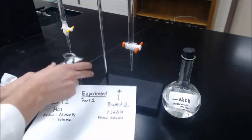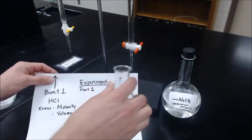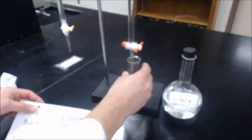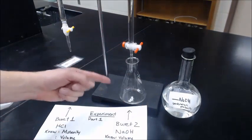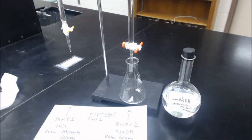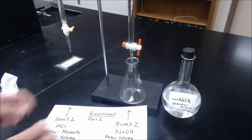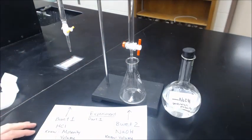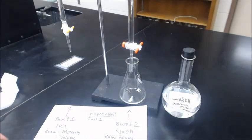In the second burette, you're going to have sodium hydroxide, the unknown solution. In this one, you're going to put some phenolphthalein in here so that at the end point it will turn pink as it becomes basic. You're going to start putting in sodium hydroxide and put in a known volume until it hits the end point and turns pink.